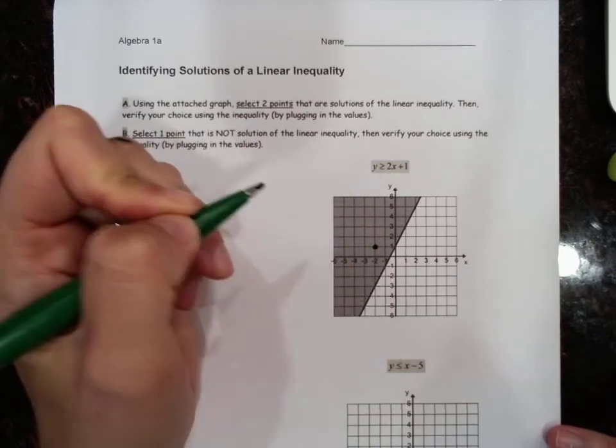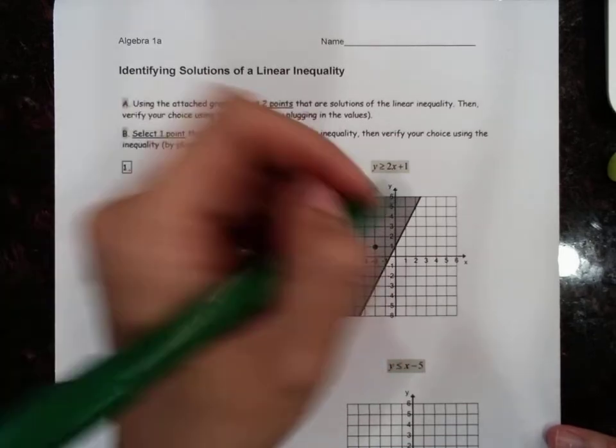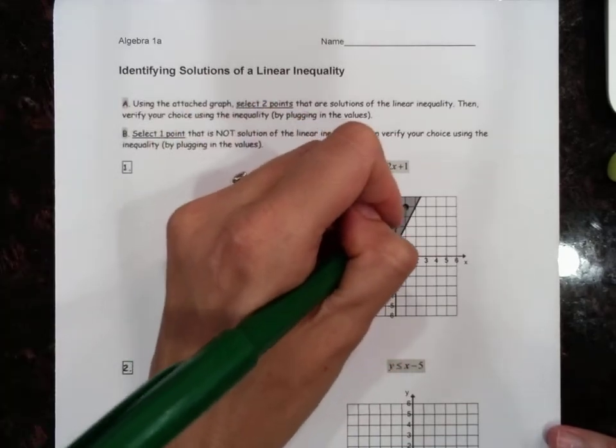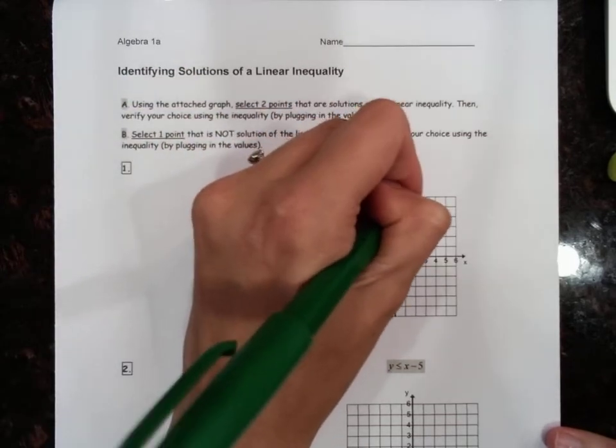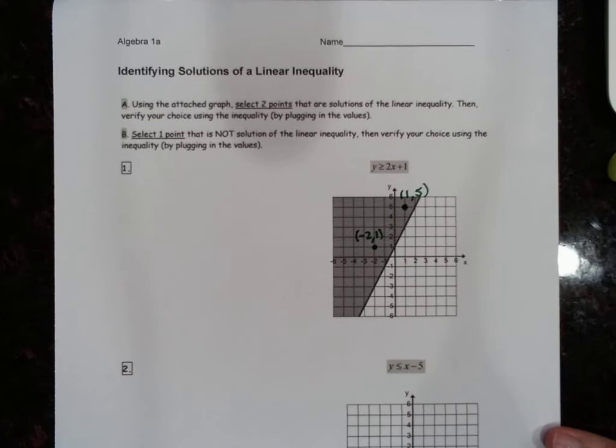You can pick (-2, 1) and (1, 5). Negative two one and one five. Make sure to write your x first and then your y.